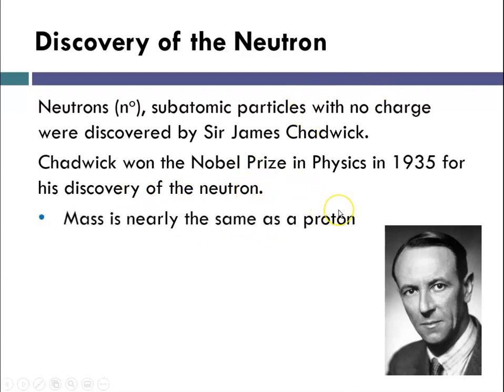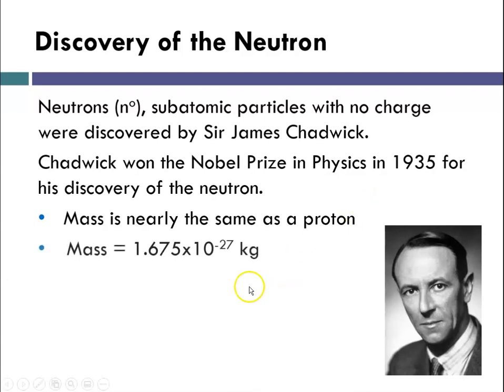James Chadwick won a Nobel Prize in Physics in 1935 for his discovery of the neutron. He determined that the neutron's mass was nearly the same as a proton's — 1.675 times 10 to the negative 27 kilograms.